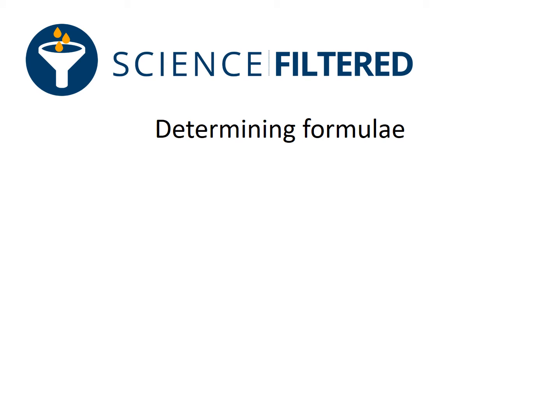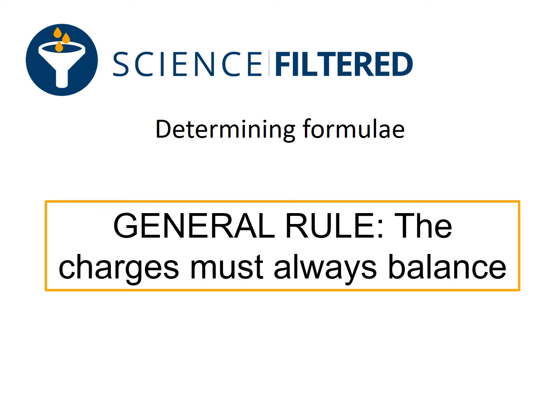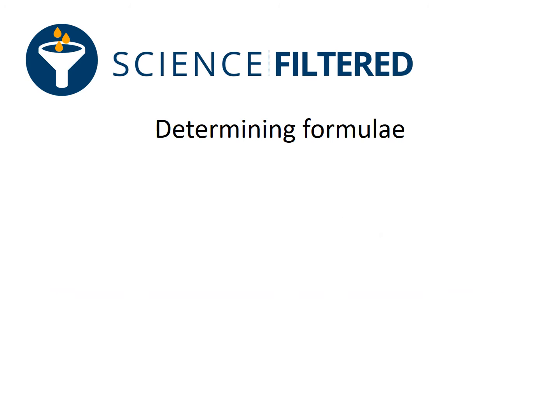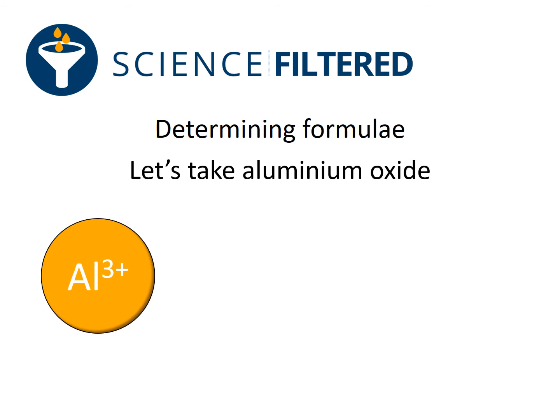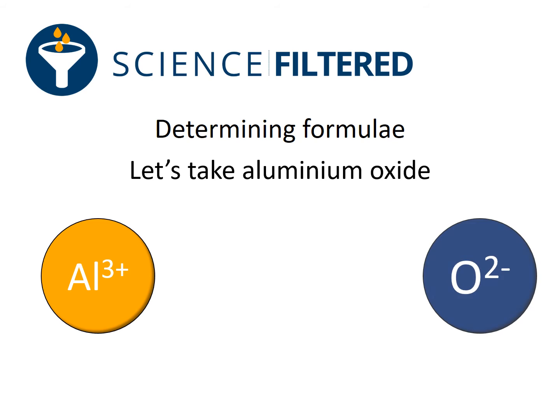To determine the formula of our next ionic compound, we're going to remember the rule that the charges must always balance — they must cancel each other out. In this video we're going to look at aluminium oxide. Aluminium has a three plus charge on its ion, Al³⁺, and the oxide ion has a two minus charge. You can see straight away that the charges do not balance.